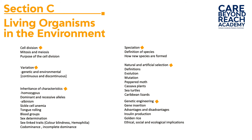After natural selection we discuss genetic engineering, which includes the production of insulin and fighting deficiency conditions by implementing golden rice, which protects against vitamin A deficiency and reduces night blindness. We also look at the concept of genetically modified organisms (GMOs) — the pros and cons, ethical considerations, social implications, and ecological implications. Those are the topics in Section C.